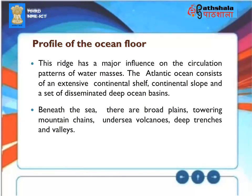The Atlantic Ocean consists of an extensive continental shelf, continental slope, and a set of deep ocean basins. Beneath the sea, there are broad plains, towering mountain chains, undersea volcanoes, deep trenches and valleys.